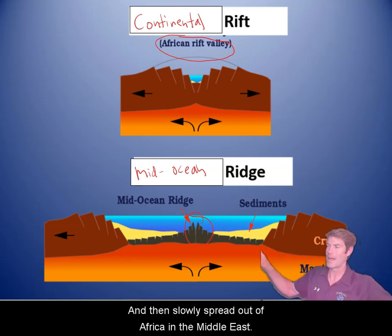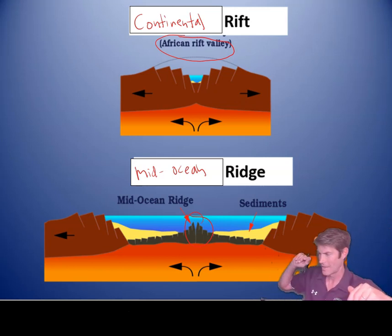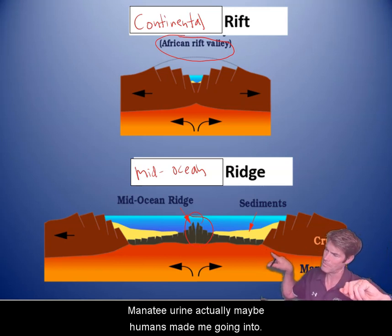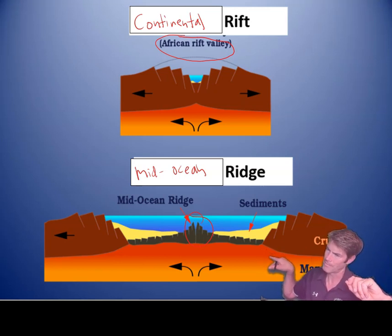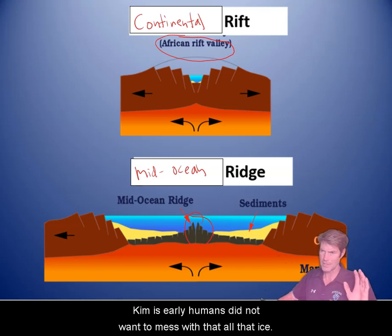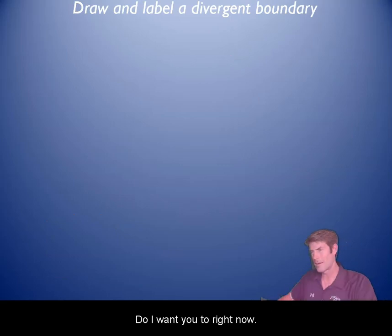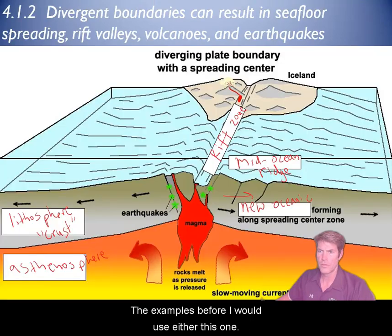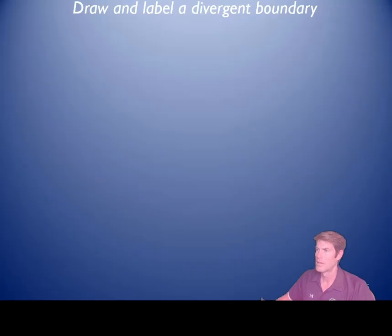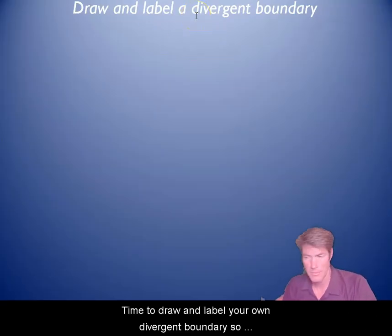Early humans slowly spread out of Africa into the Middle East, Asia, then into Europe — or actually maybe into Australia first, because Europe was pretty cold for a long time. Early humans did not want to deal with all that ice. What I want you to do right now is use one of the examples shown to draw and label your own divergent boundary.